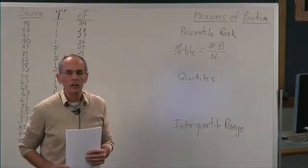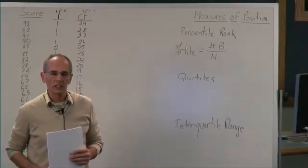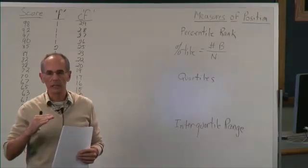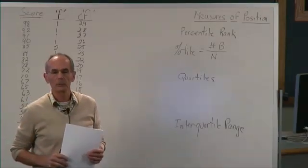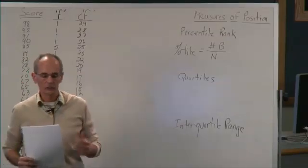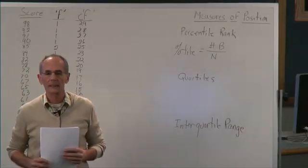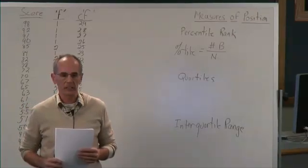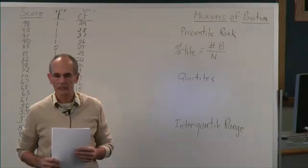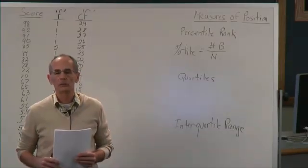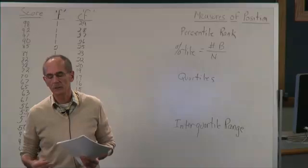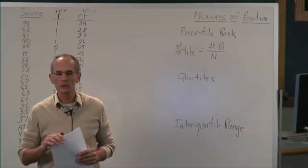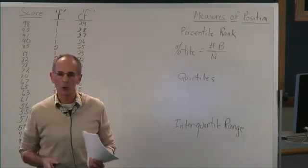A percentile rank tells you what percentage of the class, or what percentage of a group of scores, a given number exceeds. For example, if you took a test and someone told you you were at the 95th percentile, that means you are scoring better than 95% of the people who took that test. If you're at the 40th percentile, you're scoring better than 40% of the people. So the percentile rank tells you the proportion of people in a group that scores below a certain score.